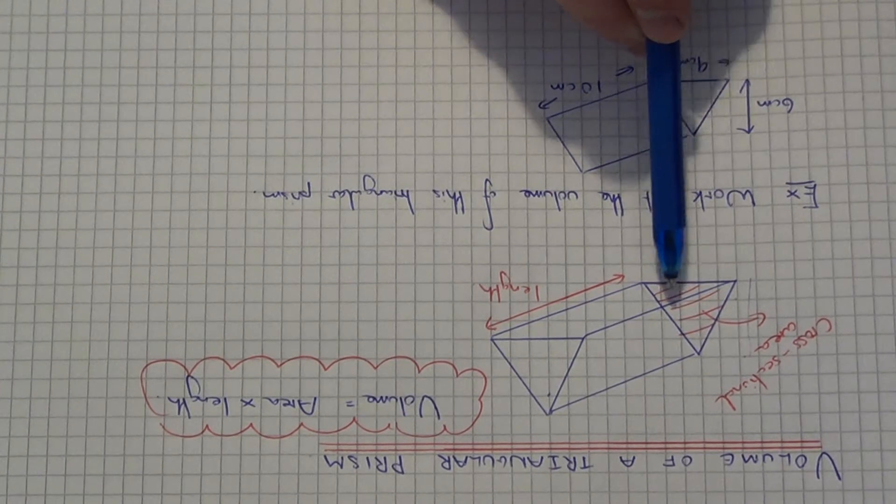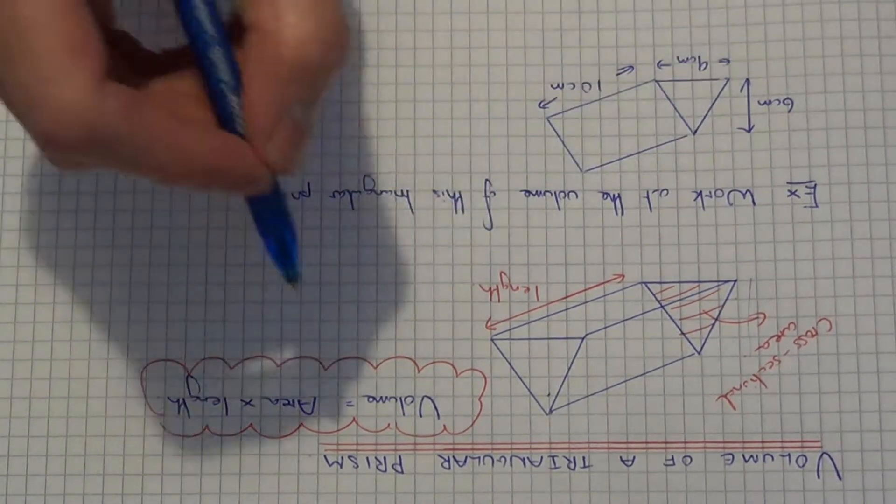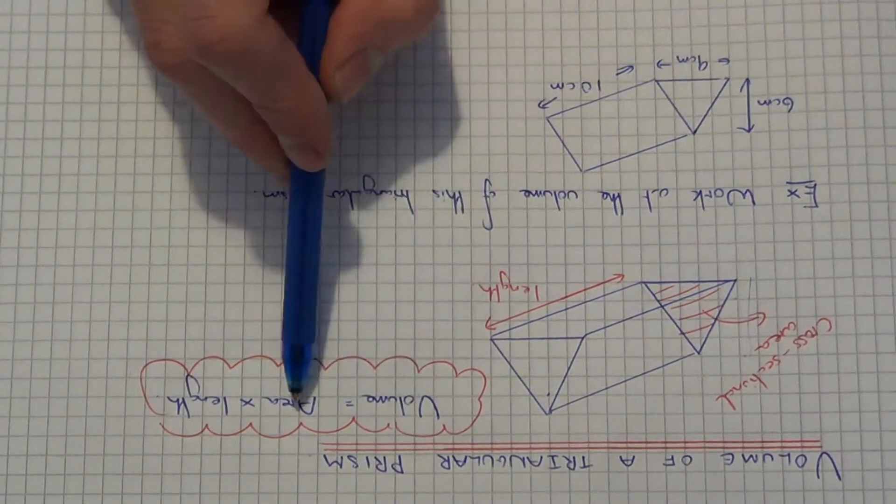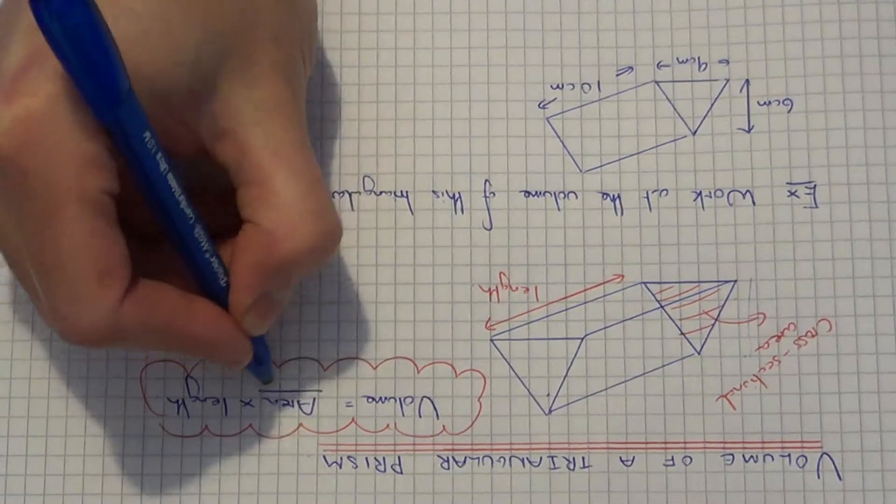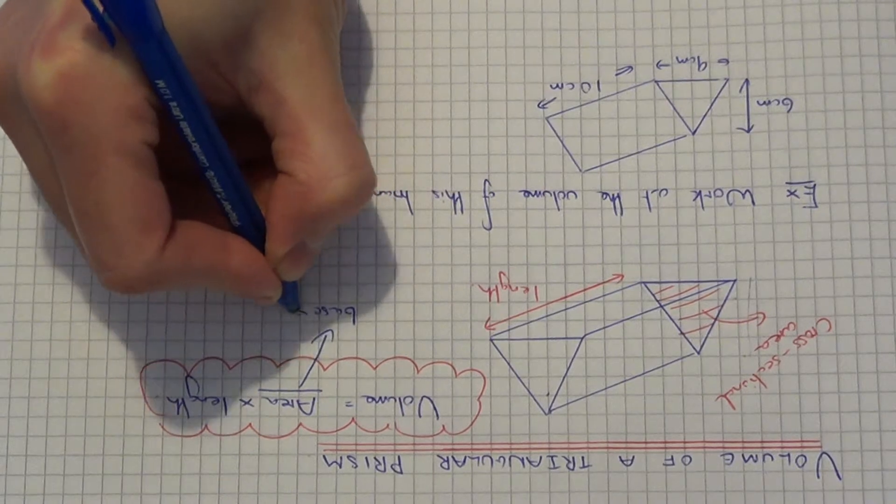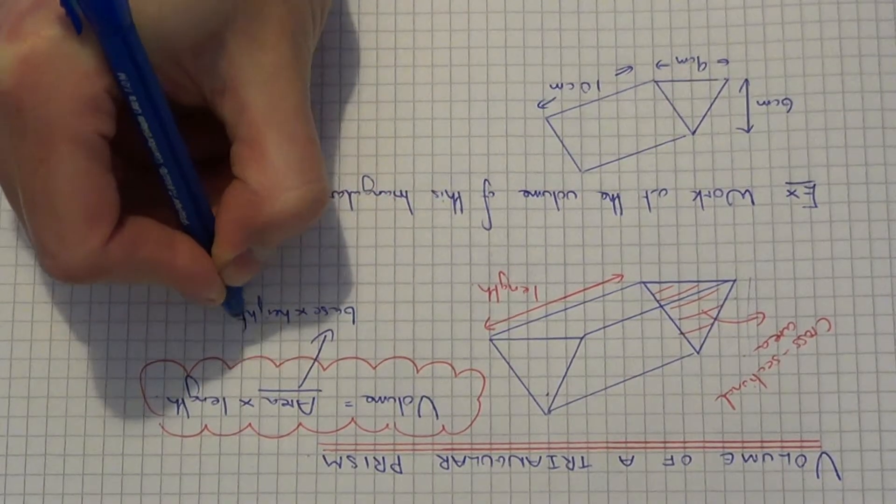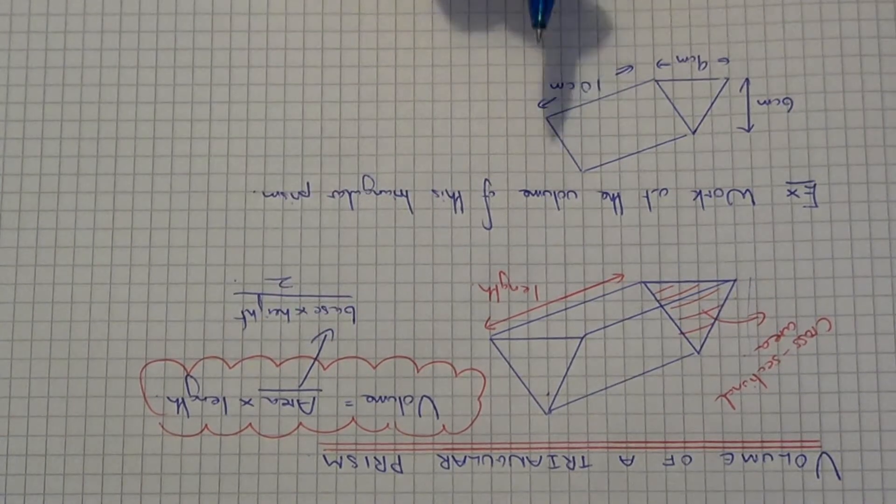Once you've got this, you multiply this answer by the length. So basically you just do area times by the length to give you the volume. And remember, since it's a triangle, you have to do base times height divided by 2. This is how you calculate the area of a triangle.